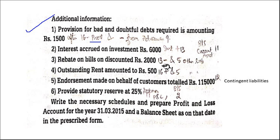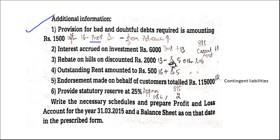Rebate on bills discounted — Schedule 13, interest earned is there, so from that we have to deduct this. Rebate means we are paying back the customer a little amount as encouragement for making the payment. So we have to deduct this from interest earned. And in Schedule 5 we have to write it because it is a liability — we have to return it to the customer. So Schedule 5, other liabilities and provisions.